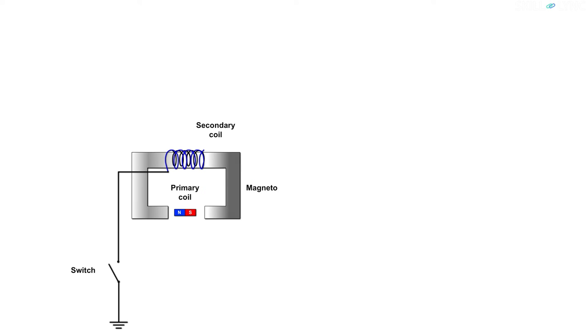One end of the primary coil is connected to the ignition switch and the other end is connected to one end of the contact breaker. The other end of the contact breaker is grounded and the capacitor is connected in parallel with it.